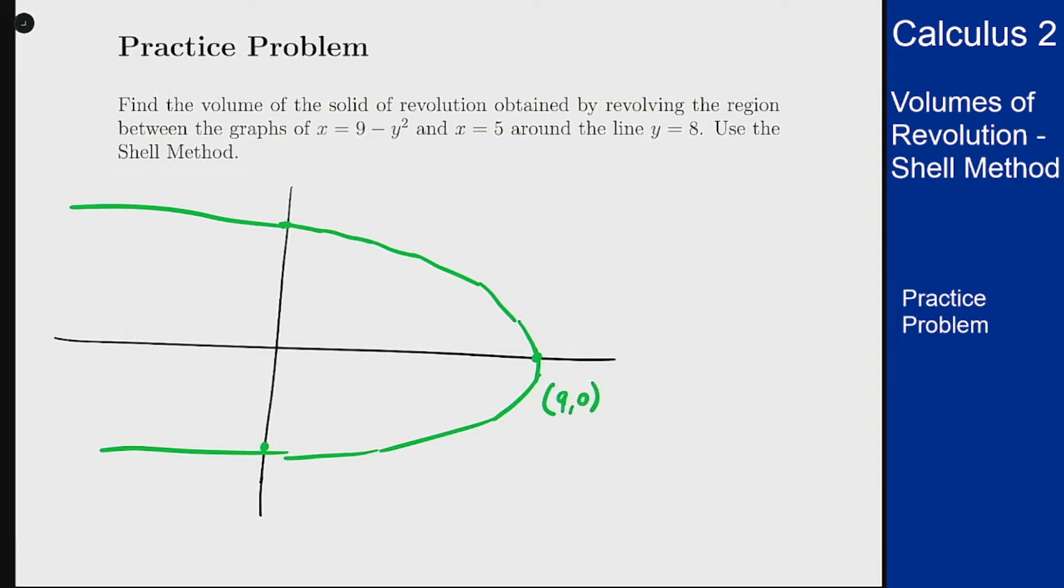x equals 5 is a vertical line heading through here. And when x is 5, plugging in 5 up here, we get 5 equals 9 minus y squared or y squared equals 4.